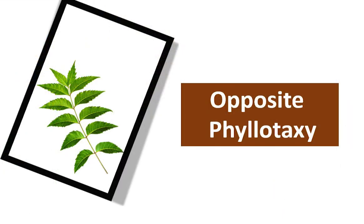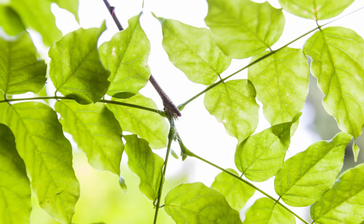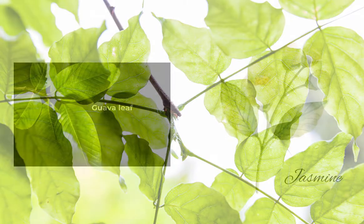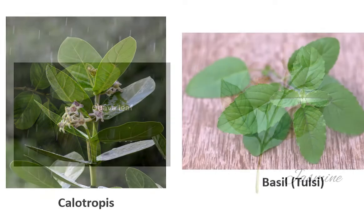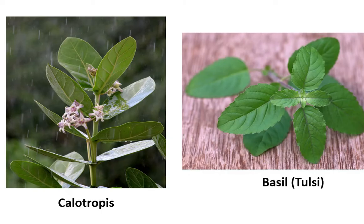Opposite Arrangement: In this type of arrangement, a pair of leaves arises from the same node but the leaves grow opposite to each other. In some plants such as Guava and Jasmine, successive pairs of leaves are parallel to each other. On the other hand, in plants such as Calotropis and Basil, successive pairs of leaves are placed at right angles to each other.